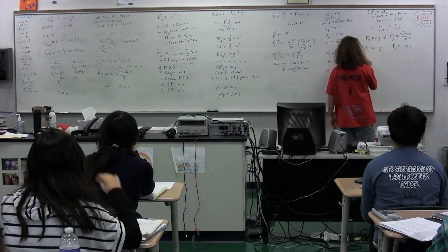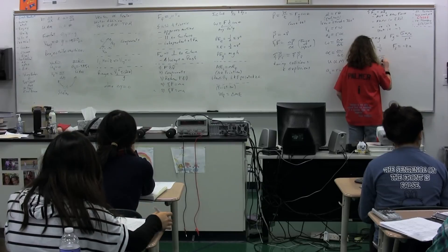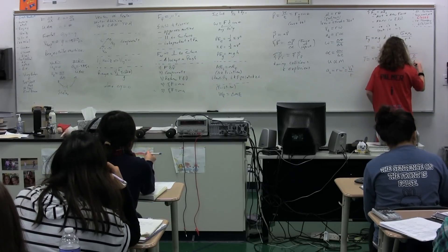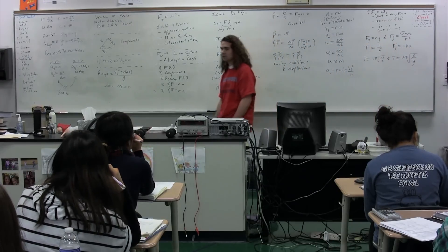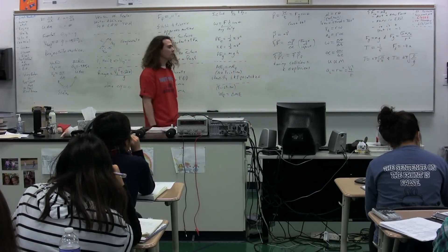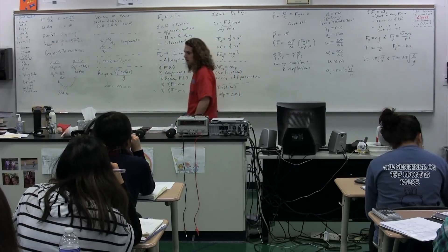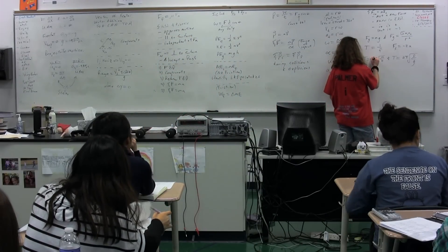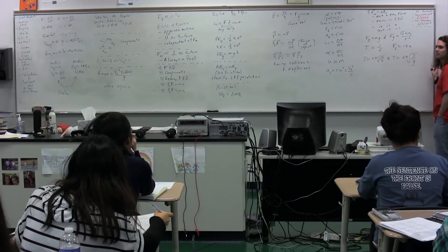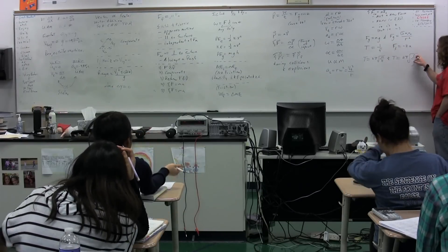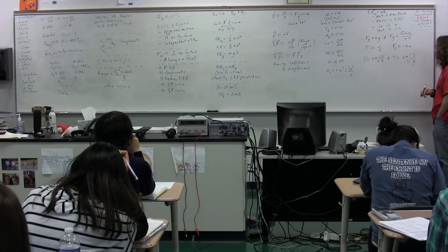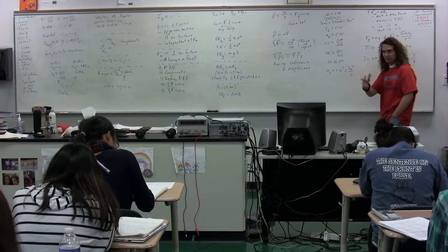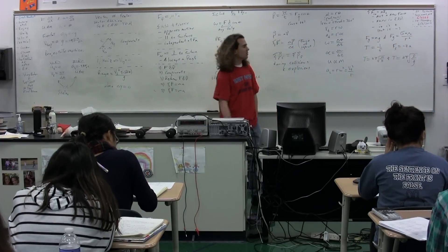We have two other equations for the period. Period equals 2 pi times the square root of M over K. And we have period equals 2 pi times the square root of L over G. What is the difference between these two equations? L is by definition the distance from the center of suspension to the mass of the pendulum, so that equation is for a pendulum. The other one is for a mass-spring system.